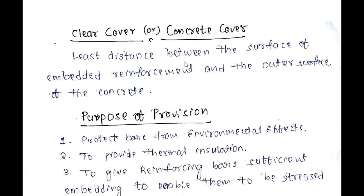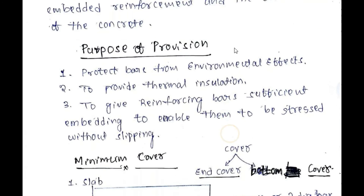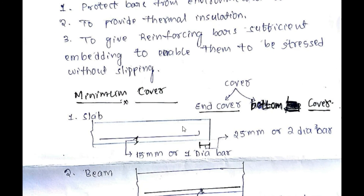Clear cover is the least distance between the surface of embedded reinforcement and the outer surface of the concrete. Which means it is the distance from the outer surface of the concrete to the outer surface of the reinforcement.